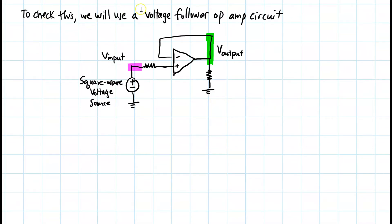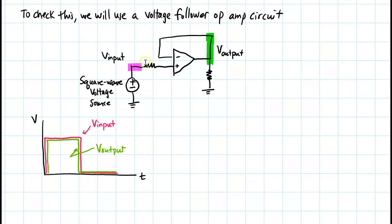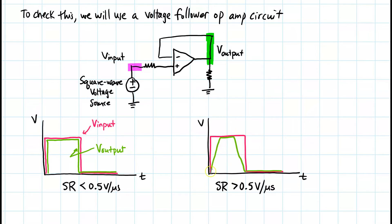To check the slew rate, we will use a voltage follower op amp circuit with a square wave voltage source as input. If the slew rate is not violated, the voltage follower output should exactly match the input. However, if the slew rate is exceeded, the output will not follow the input. The left case shows the output following well; the right shows the slew rate exceeding 0.5 volts per microsecond, so the op amp is no longer linear.